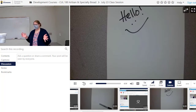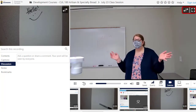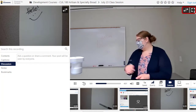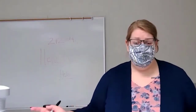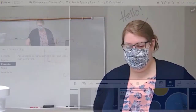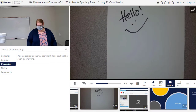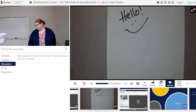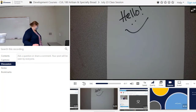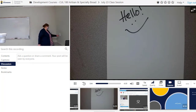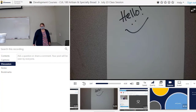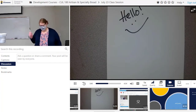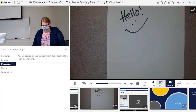You can also switch which source is displayed in which part of the player, or expand one source to view it alone. If you're watching a particular stream and can no longer follow what your instructor is doing or saying, you might need to adjust your view. For example, if you are watching the cam in full view but your instructor moves to speaking to their slides, you should adjust your view accordingly.